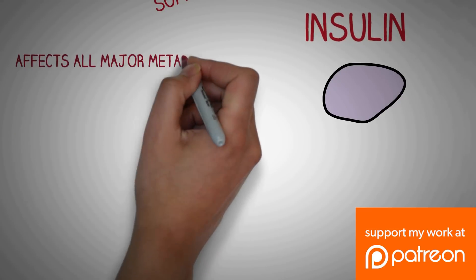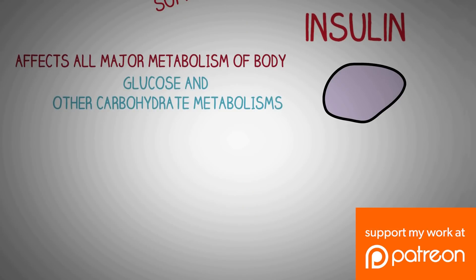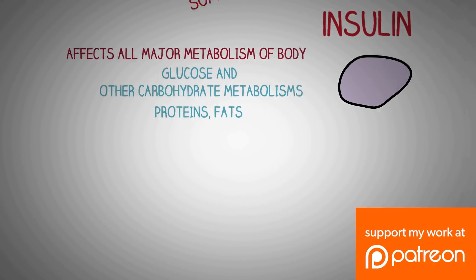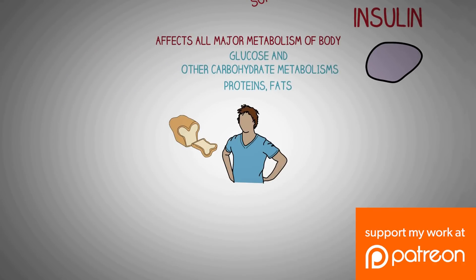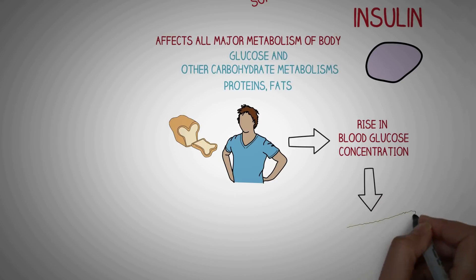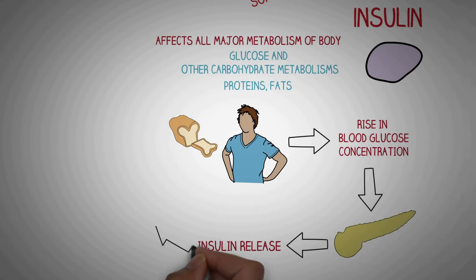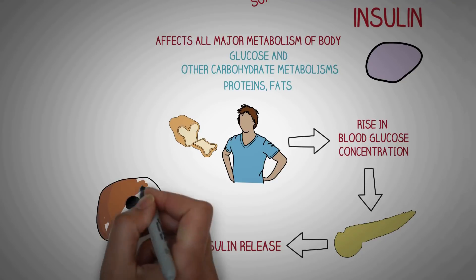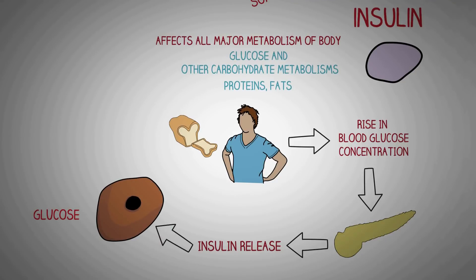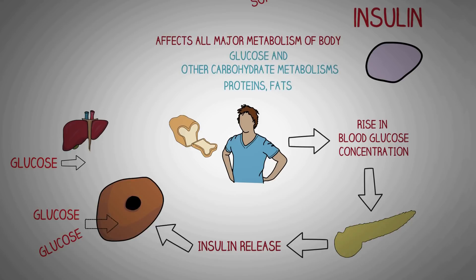Insulin has a wide range of effects on the metabolism of glucose, other carbohydrates, proteins, and fats. Whenever we eat, there is a rise in blood glucose concentration, which is detected by the pancreas, causing the release of insulin. The overall effect of insulin is to decrease blood glucose concentration by stimulating glucose uptake into cells and by converting glucose into glycogen, the storage form, in the liver.